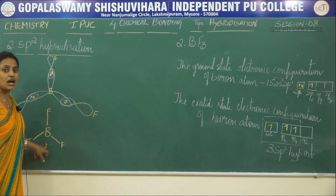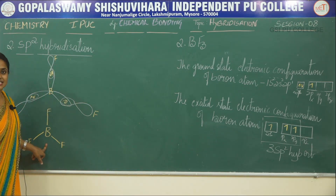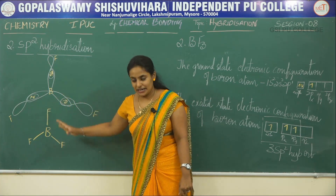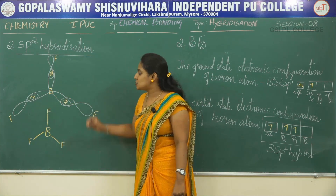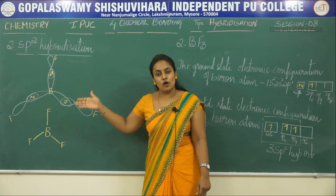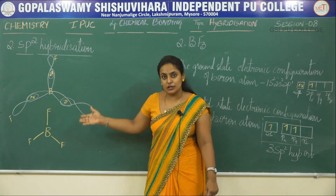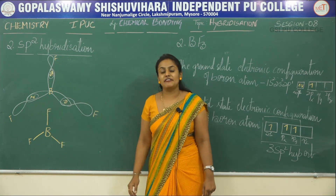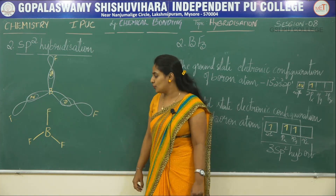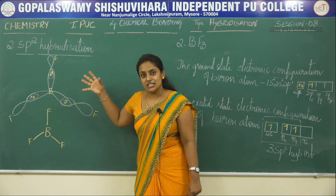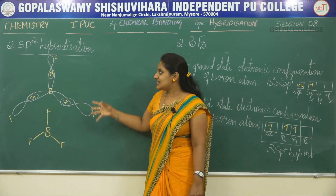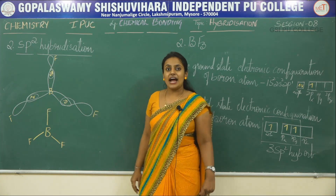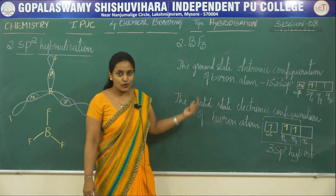The three B-F bonds are arranged such that the geometry of the molecule is trigonal planar. As there is no lone pair present, the geometry equals the shape. Therefore, both the geometry and shape of BF3 are trigonal planar. These are the two examples of sp2 hybridization.